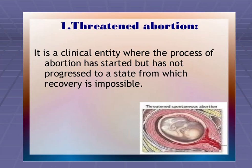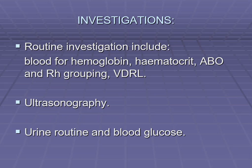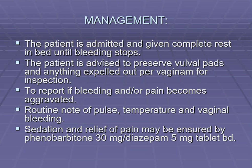The signs and symptoms of threatened abortion are mainly two: abdominal pain and bleeding. Vaginal bleeding is usually slight and bright red, and the bleeding is usually painless, but there may be mild backache or dull pain in the lower abdomen. Investigations include routine blood tests, sonography for confirmation, and urine routine. Management is through complete bed rest — the patient is admitted until bleeding stops, advised to preserve vulval pads to monitor any loss, and to report any bleeding or pain. Sedatives and pain relief medications are given.